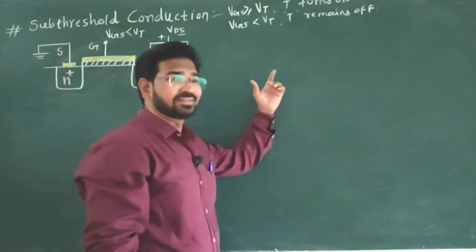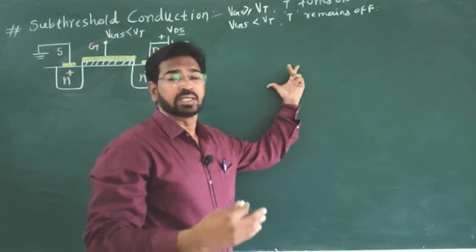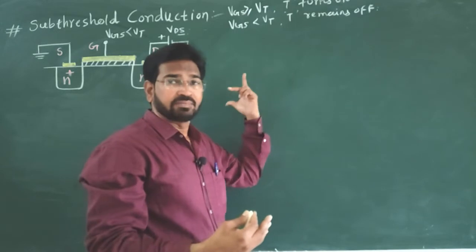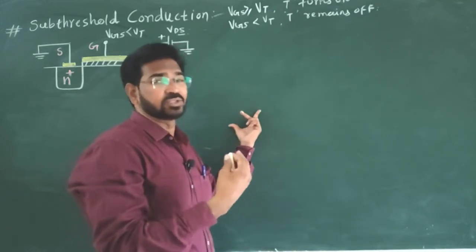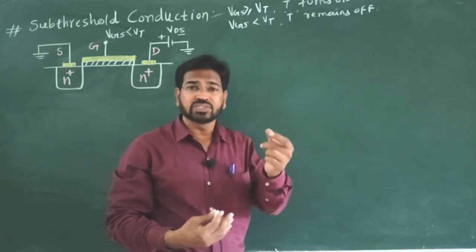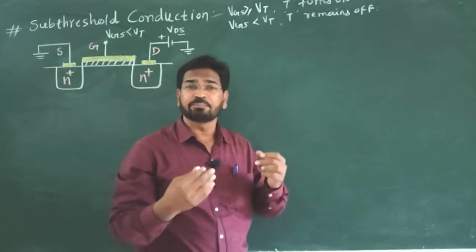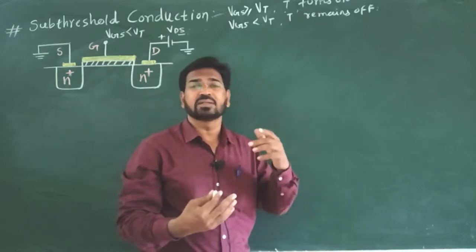Who decides this? The manufacturer of transistor. A particular company which is manufacturing transistors decides the threshold voltage and it is constant. For N channel E MOSFET it is positive value and for P channel E MOSFET it is negative.